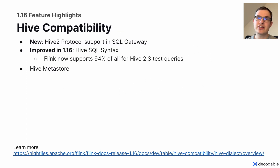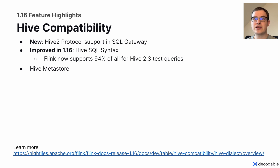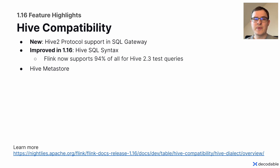Another feature is that we made a lot of progress towards compatibility with Apache Hive. In the Flink 1.16 release, we added the Hive 2.0 protocol in the SQL gateway, as we've just discussed. Also, the SQL syntax has been improved. Flink now supports 94% of all the Hive 2.3 test queries, and Flink also supports the Hive Metastore for accessing the Hive catalog in Flink.